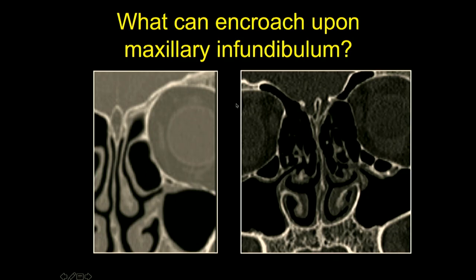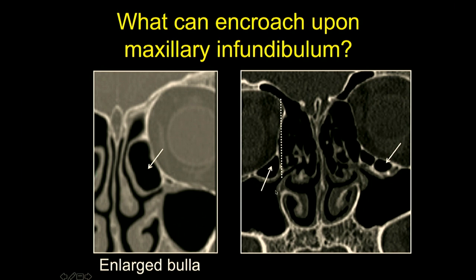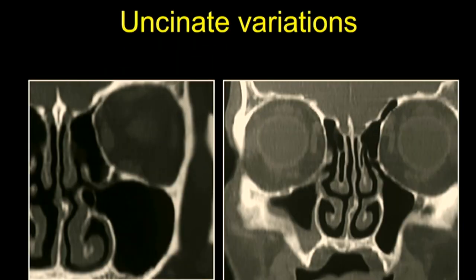What can encroach on the maxillary infundibulum and result in obstructive sinusitis? A large bulla can obstruct the infundibulum. Haller cells — anteroethmoidal cells that go into the floor of the orbit, lying lateral to the lamina papyracea — when large, can also obstruct the infundibulum. Various uncinate variations can encroach onto the infundibulum, such as a hooked uncinate or a pneumatized uncinate. An atelectatic uncinate reaching very close to the medial wall of the orbit can result in obstructive sinusitis and make the orbit very prone to injury during endoscopic procedures.